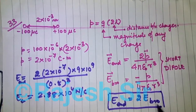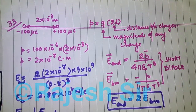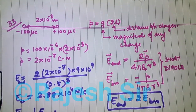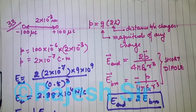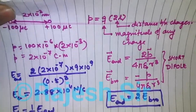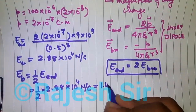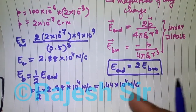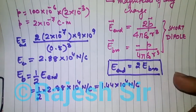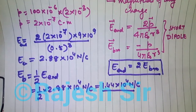The electric field at the end-on position is always twice the electric field at the broadside-on position. So the electric field at the broadside-on position will be half of the end-on value: half of 2.88×10⁴ N/C, which comes out to be 1.44×10⁴ newton per coulomb. It is advisable not to apply the entire formula again; use this known result directly.